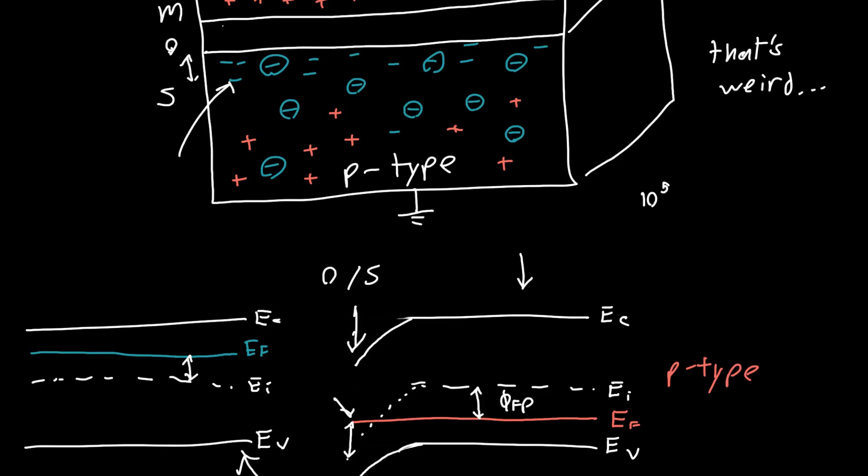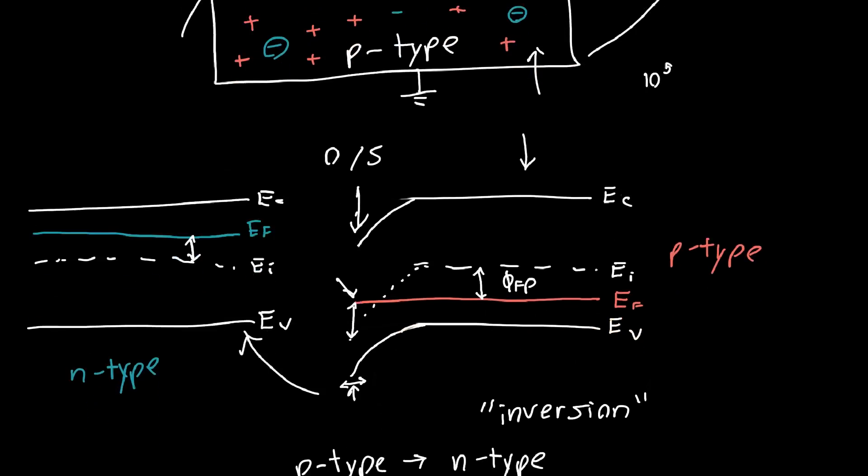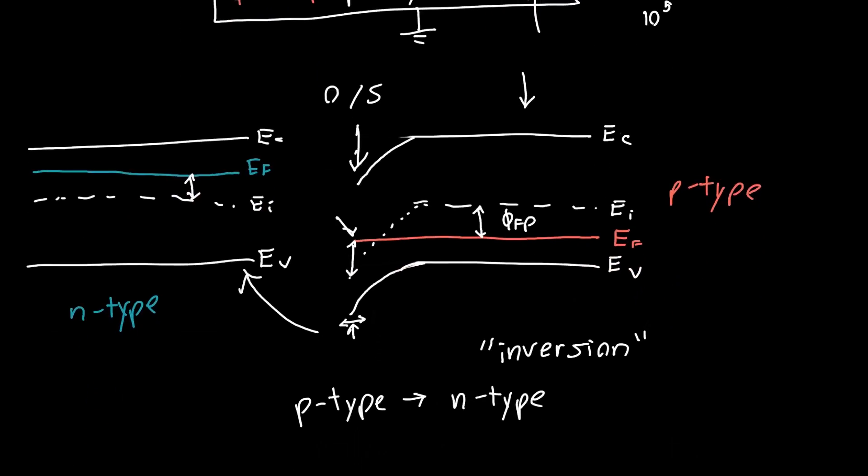And that kind of makes sense right because we had a p-type semiconductor and now it looks like an n-type semiconductor because there's so many electrons near the surface. Now this is only true near the very surface because the electrons are only very very close to the metal. In the bulk semiconductor things will look approximately the same if we go far far away, but near the surface we get this thing called inversion.